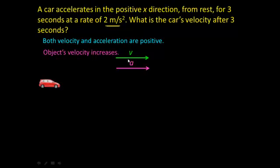The reason the acceleration vector points in the positive x direction is that it's a positive number, indicating the velocity is changing in the positive direction. As we developed in a previous video, whenever the velocity and acceleration vectors point in the same direction, the object's velocity is going to increase.